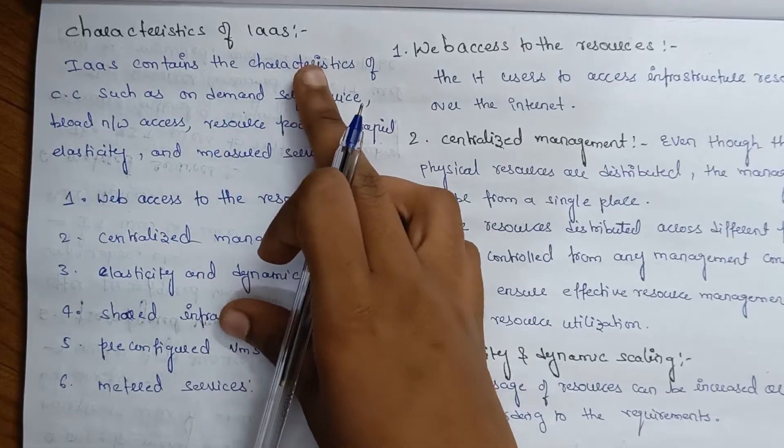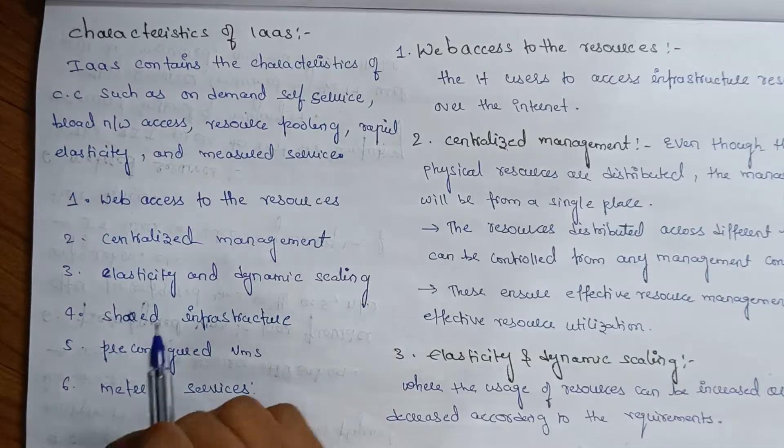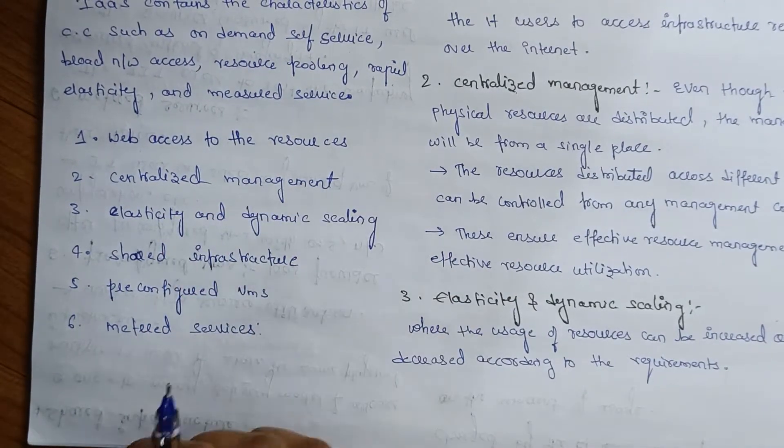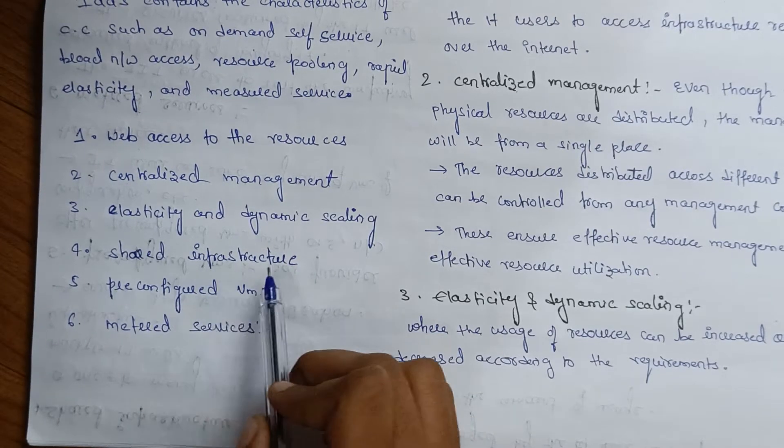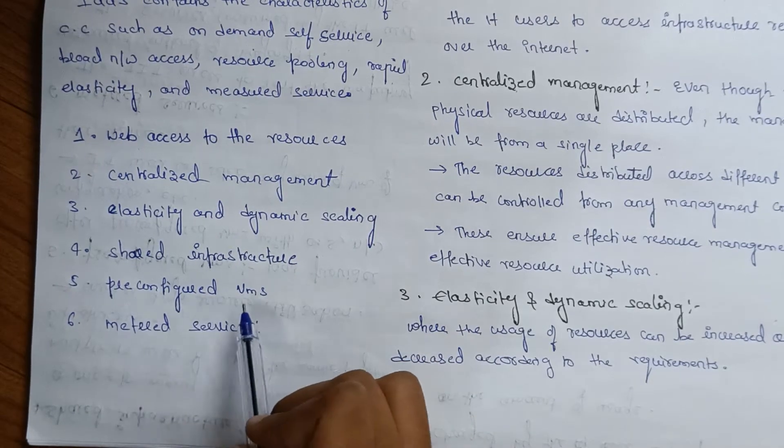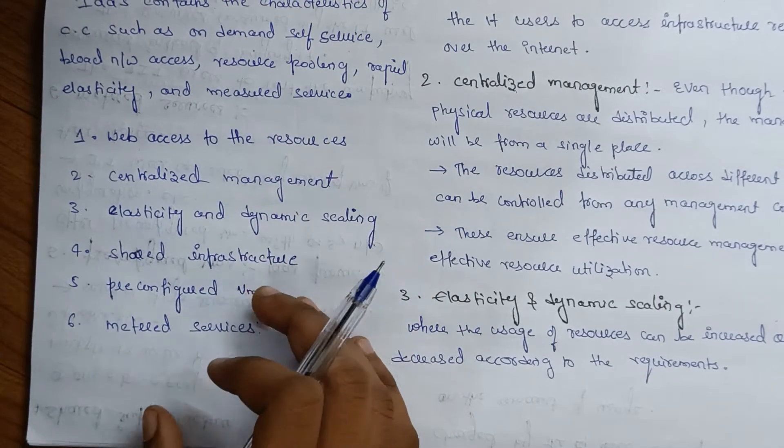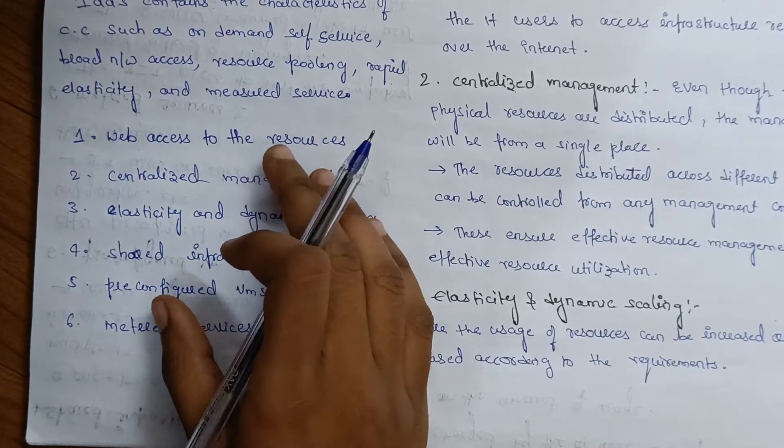Infrastructure as a Service provides these characteristics. The characteristics include web access to the resources, centralized management, elasticity and dynamic scaling, shared infrastructure, pre-configured VMs, and metered services. These are the six characteristics.